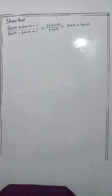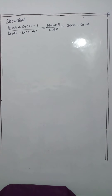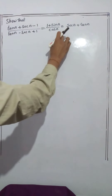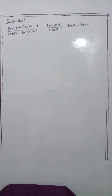Today we are going to prove that (tan a + sec a - 1)/(tan a - sec a + 1) equals (1 + sin a)/cos a, which is also equal to sec a + tan a.